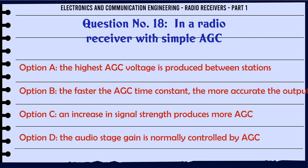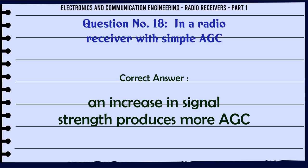In a radio receiver with simple AGC: a. The highest AGC voltage is produced between stations. b. The faster the AGC time constant the more accurate the output. c. An increase in signal strength produces more AGC. d. The audio stage gain is normally controlled by AGC. The correct answer is an increase in signal strength produces more AGC.